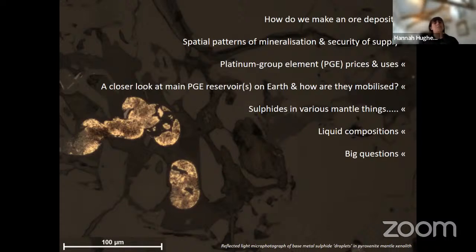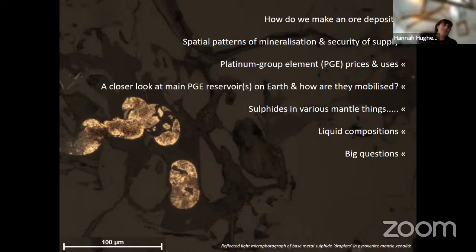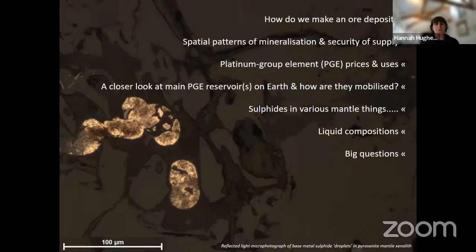Platinum group elements are one of those critical raw materials. We tend to think of critical raw materials in terms of rare earth elements, lithium, cobalt, and nickel, but PGE are also critical. Because they are a group of elements, they have quite complicated economics and mineral processing tied up with them, like the rare earths. I also want to look at the main PGE reservoirs and how we move those PGE around via various geological processes, whether in the mantle or up into the crust, particularly thinking about sulfides and platinum group minerals.